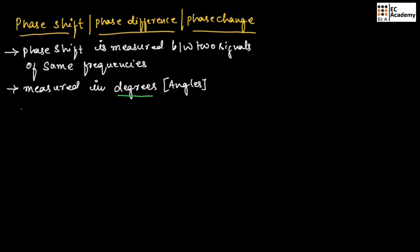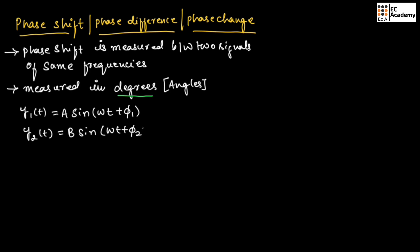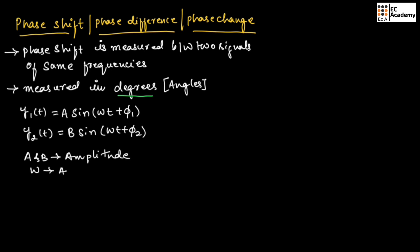For example, if we consider the first signal y1(t), that can be given as a·sin(ωt + φ1), and the second signal y2(t) = b·sin(ωt + φ2). Here a and b represent the amplitude of the two signals, omega represents angular frequency, and φ1 and φ2 represent the phase of the signal.